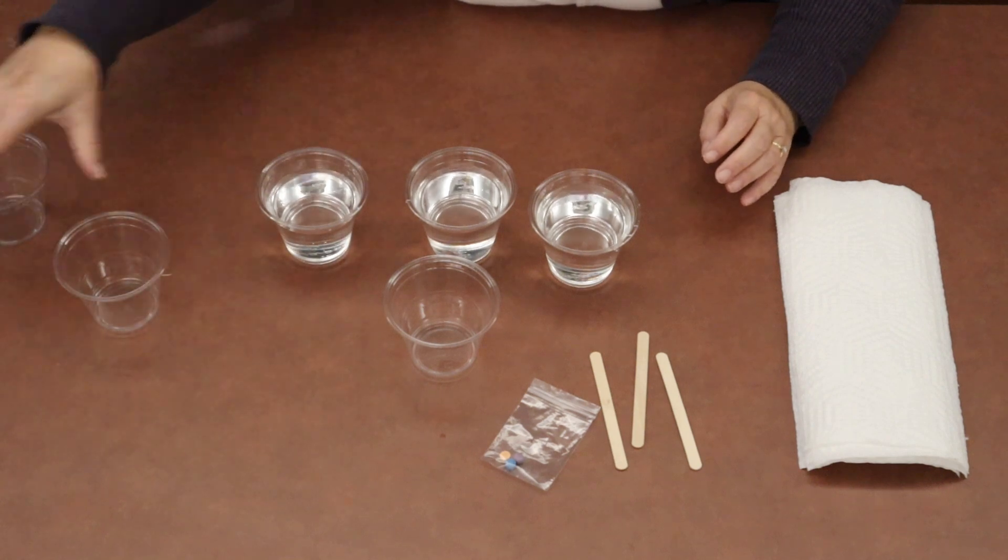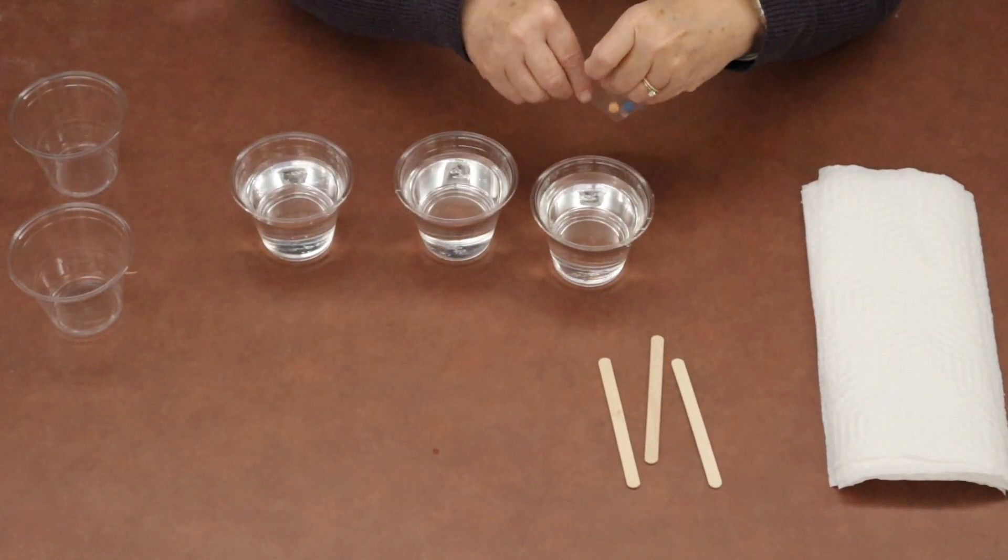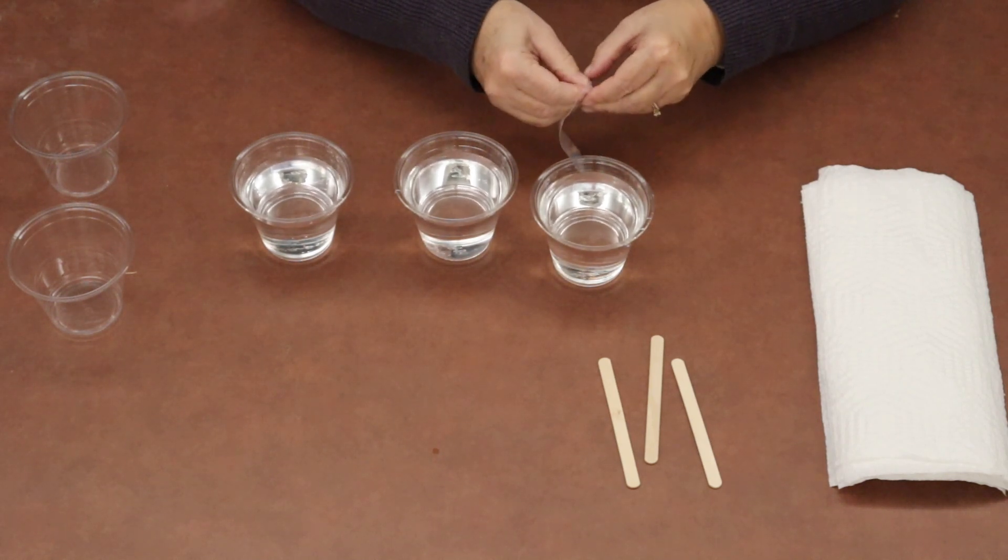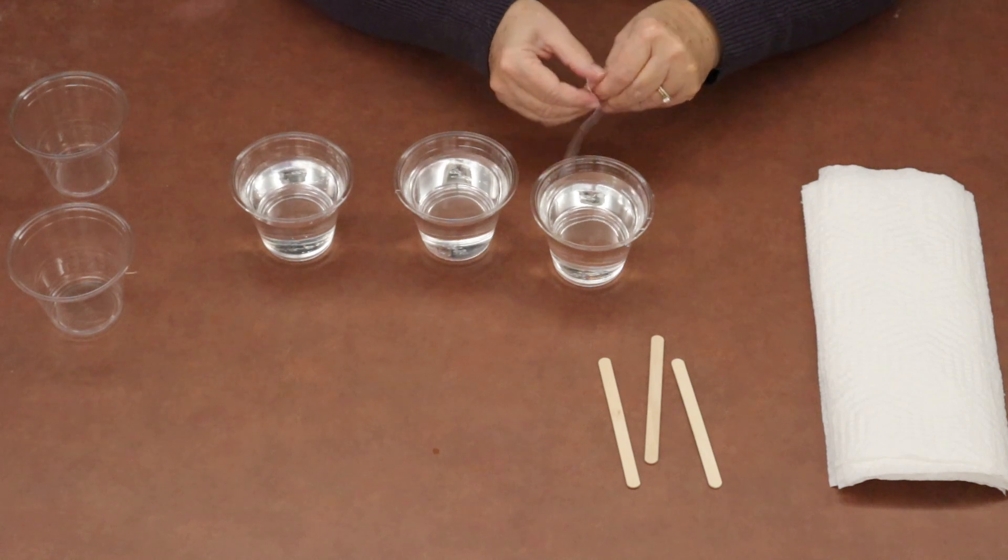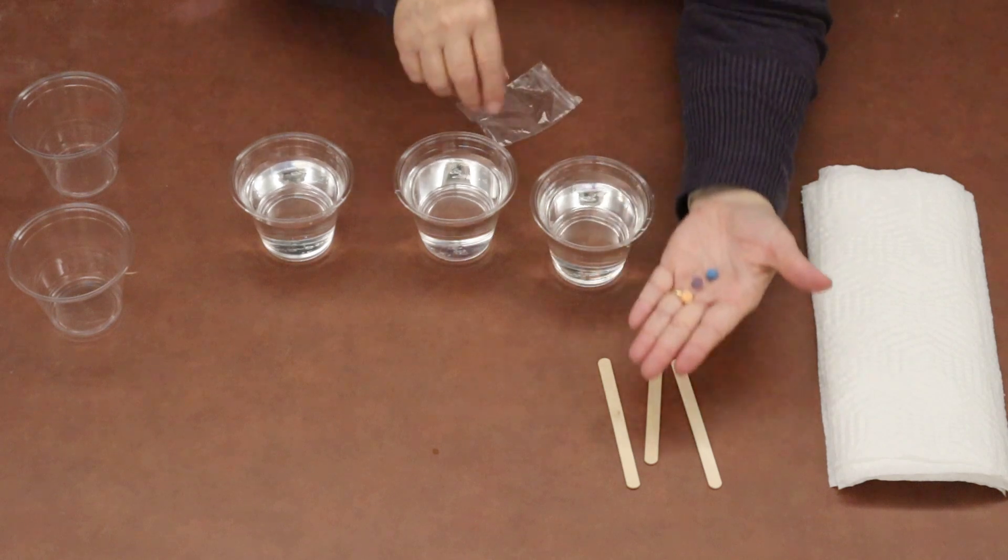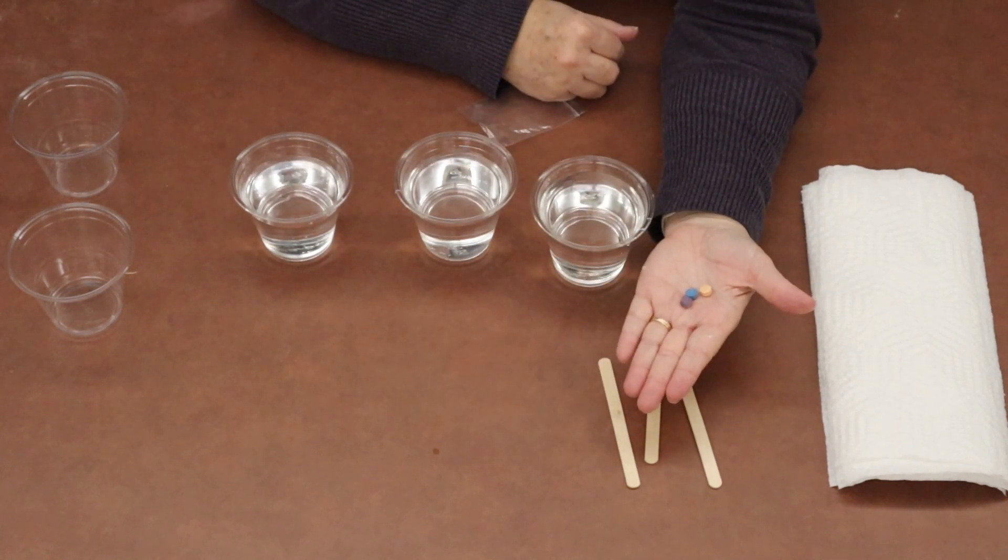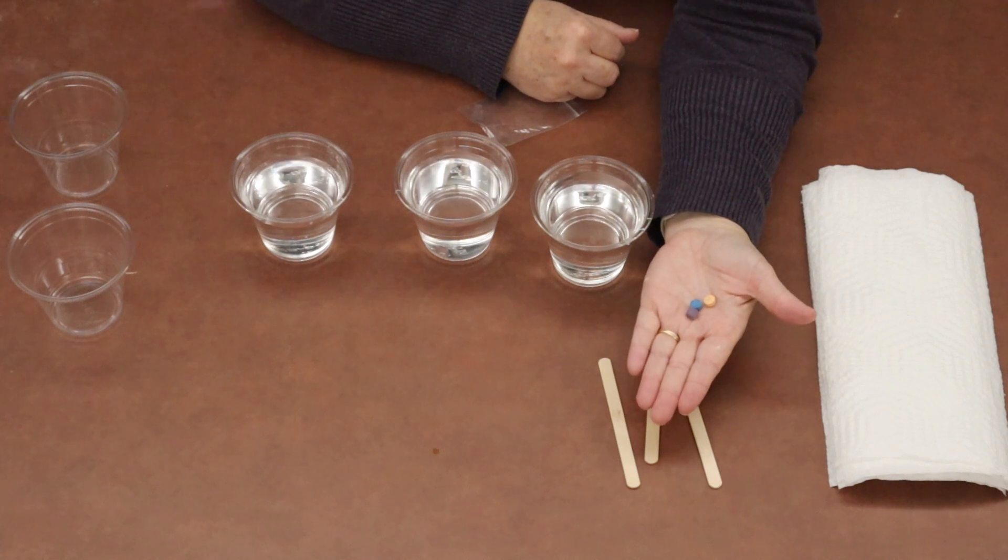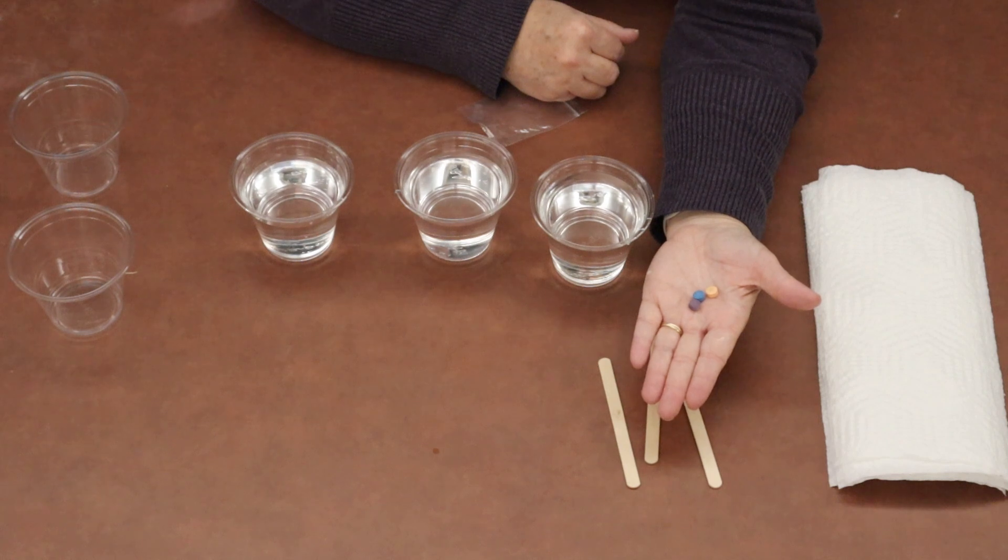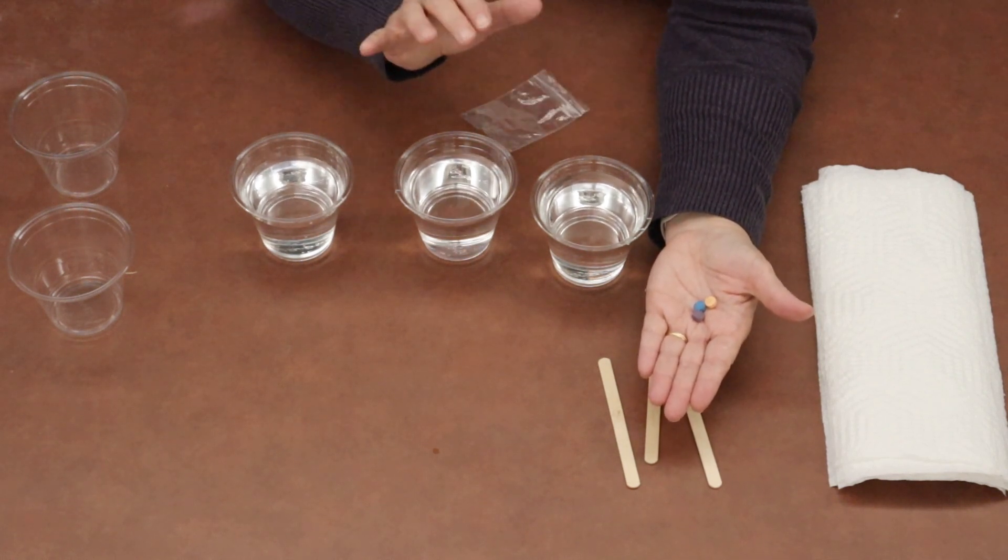So we'll set the empty ones aside for just a second. The first thing we want to do is take our tablets and get them out of the plastic bag. You're gonna have blue, purple, and orangey, and when they dissolve we're gonna have blue, red, and yellow which are the primary colors.